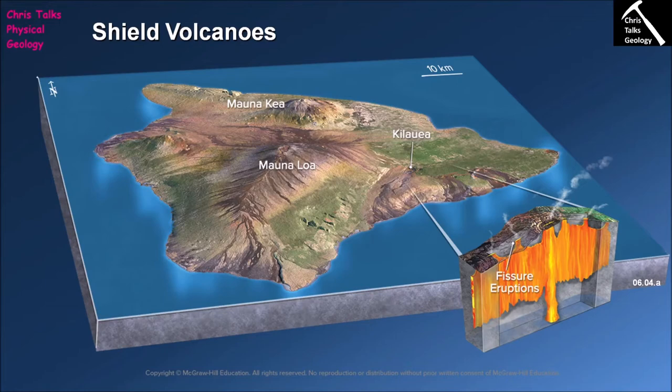The island of Hawaii contains three very large volcanoes: Mauna Kea, Kilauea, and Mauna Loa. Interestingly, when you look at Mauna Loa in particular, it looks very tall, which doesn't quite fit with the type of morphology we would expect from a shield volcano.